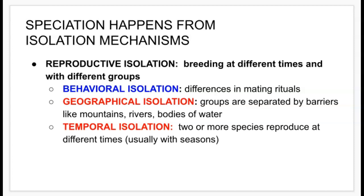Speciation happens from isolation mechanisms. Much like the Galapagos finches, they were isolated from the mainland population and developed into their own species. Reproductive isolation means breeding at different times and with different groups. Behavioral isolation is when you have differences in mating rituals, which determine who gets to mate and when.